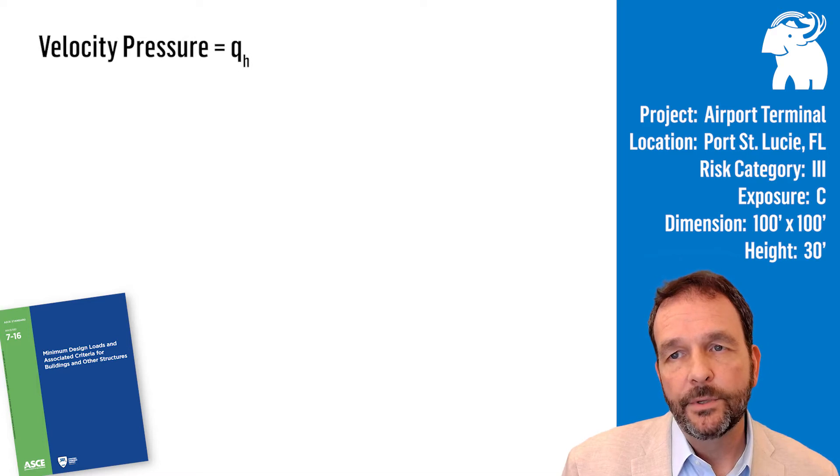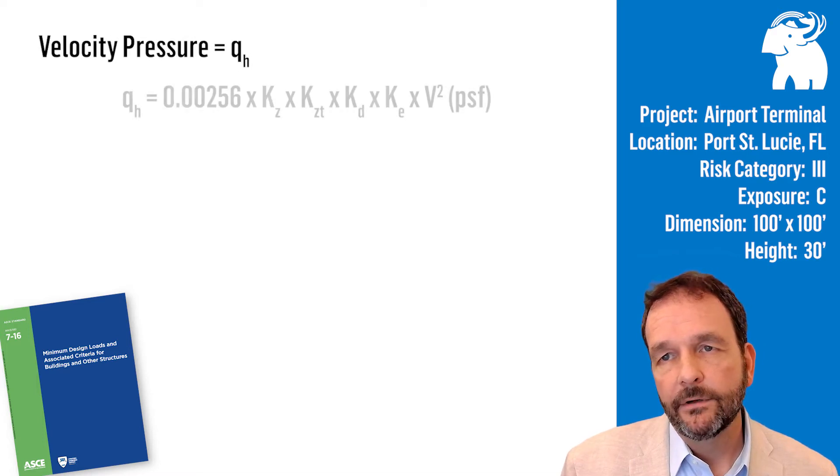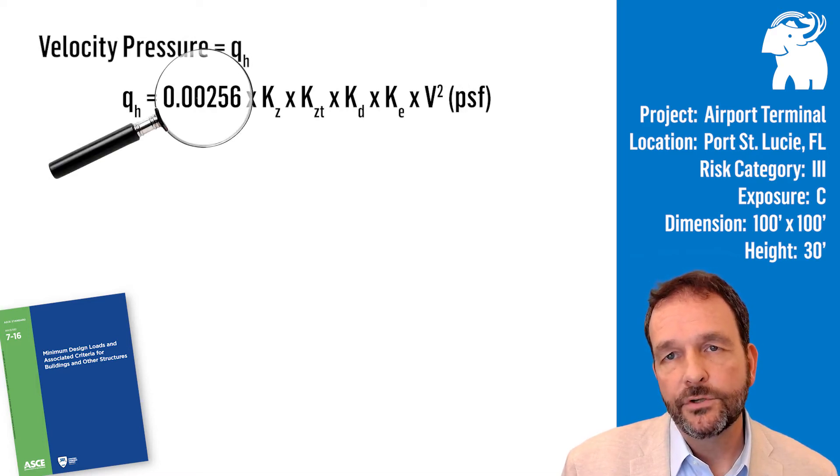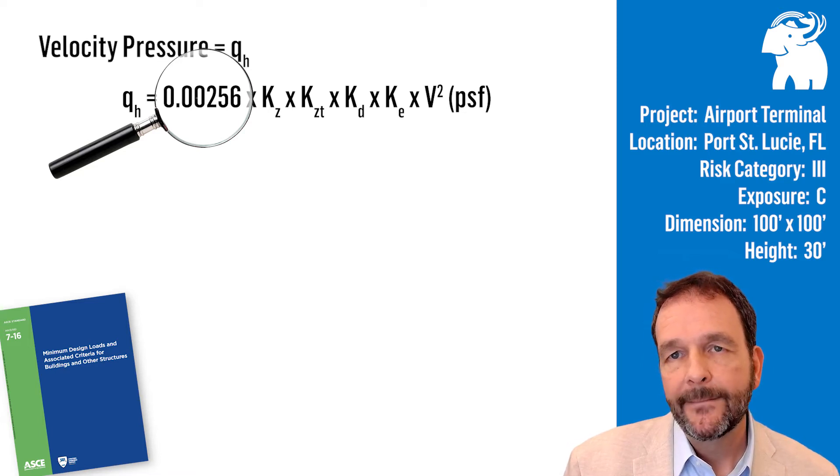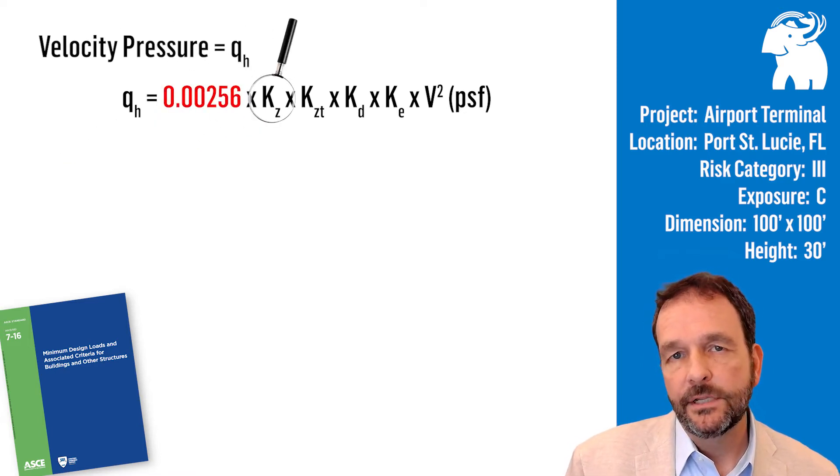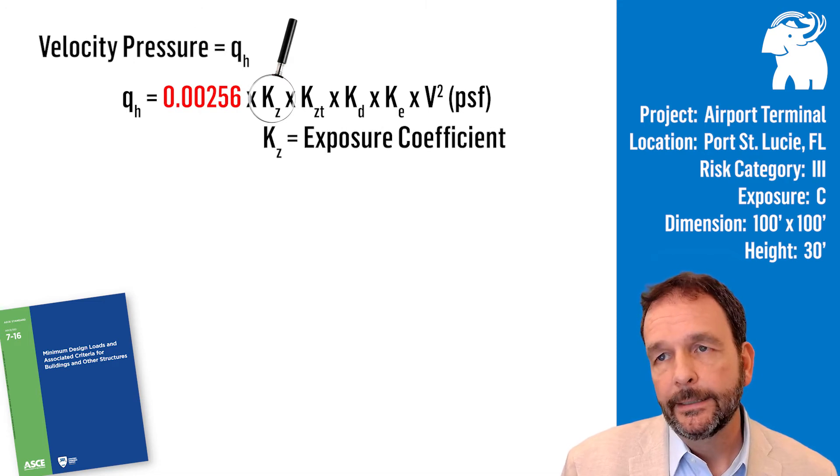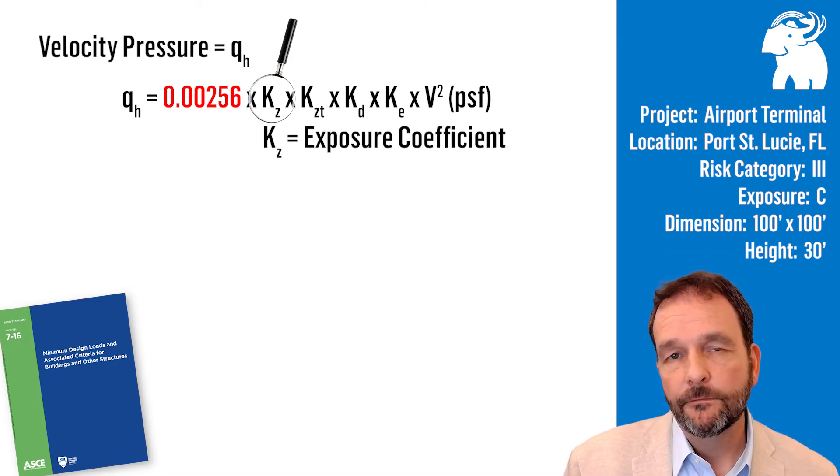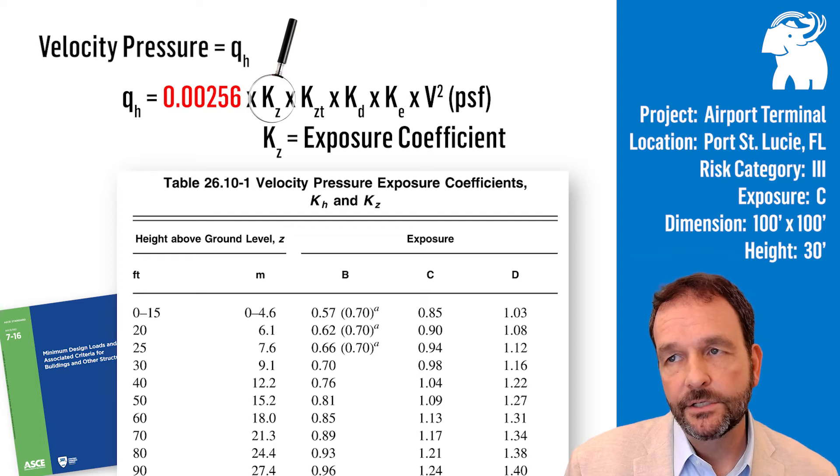The velocity pressure we calculate. First we have a constant, 0.00256, an air constant based on the mass density of the air blowing across the terrain. Then we have K sub Z, an exposure coefficient, also referred to as a ground roughness coefficient, pulled from tables in ASCE 7.